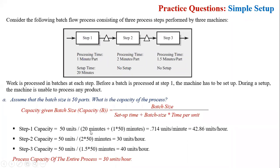The setup time is 20 minutes, and the processing time is 50 — that is 50 time per unit — multiplied by the batch size. So we get 0.714 units per minute. And if we want to calculate the amount per hour, we multiply by 60, and then we have the answer per hour.